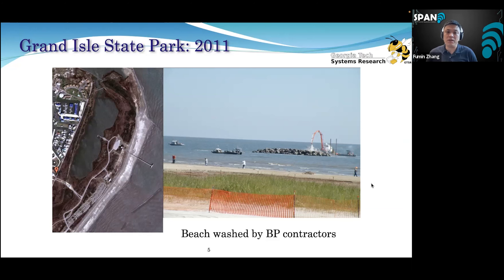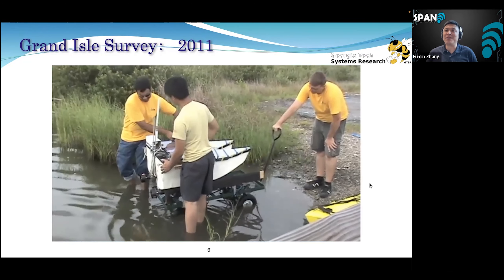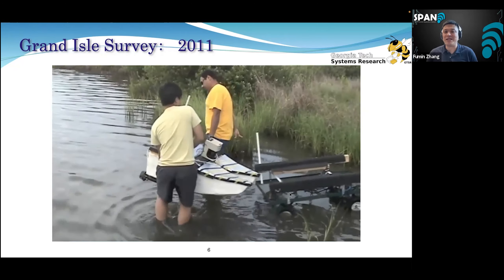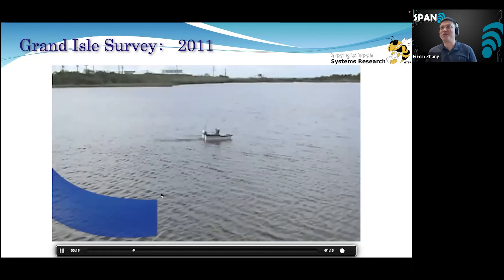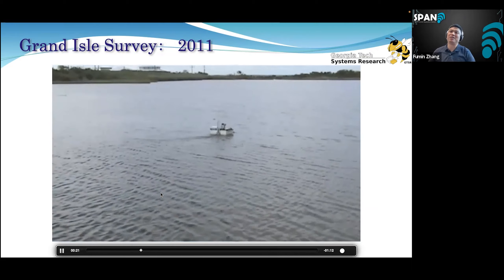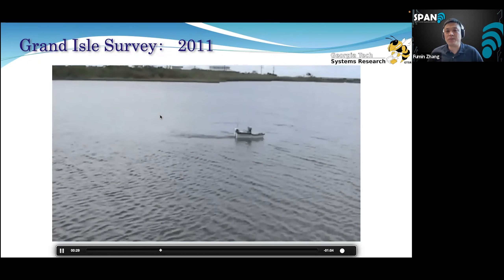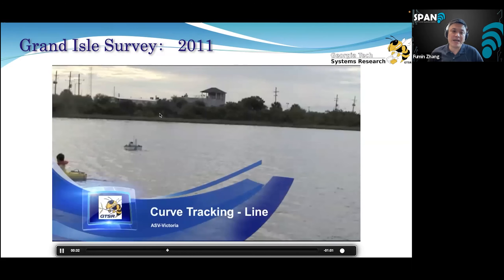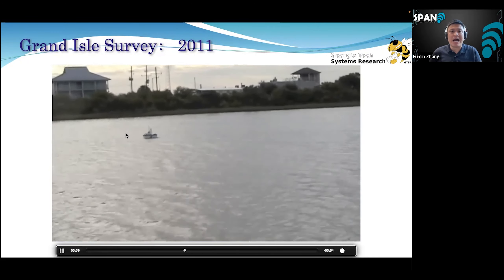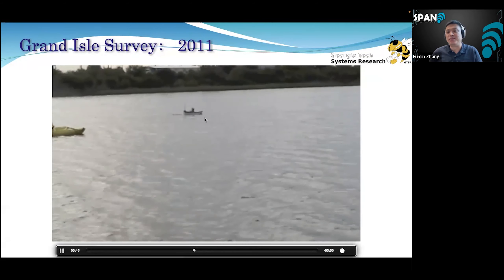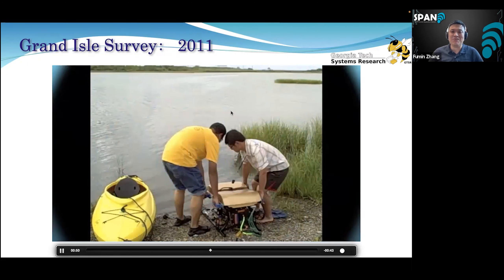We used student-developed robots as mobile sensors to collect data. This was a boat — remember, this was 2011, it doesn't look as cool after 11 years, but this is what we were able to do at that time to do autonomous sampling with a boat equipped with optical-based crude oil sensors. The surface robot was able to track different sampling paths and collect oil samples. The problem with student-built platforms is they're sometimes not reliable, which is why someone had to be there to make sure it worked well.